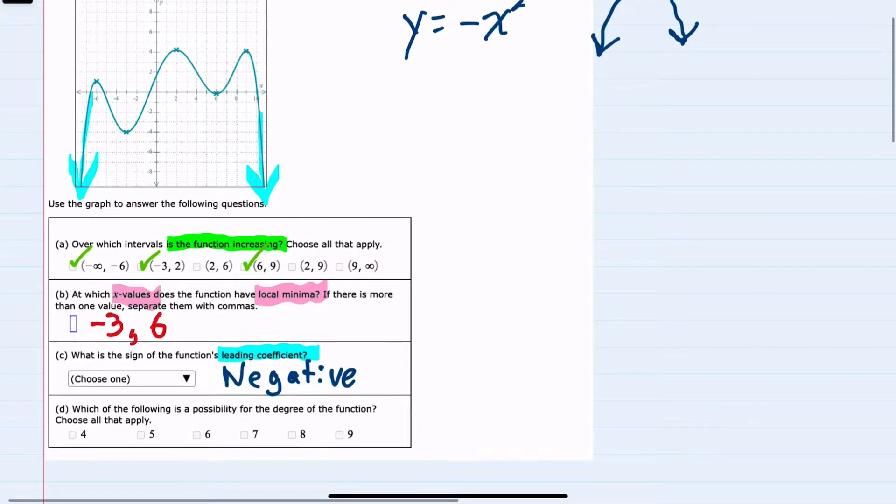Lastly we're asked which of the following is a possibility for the degree of the function. And we said based on the end behavior alone it must be even to have a down to the left and down to the right end behavior. So I'll cross out the ones that are not even.